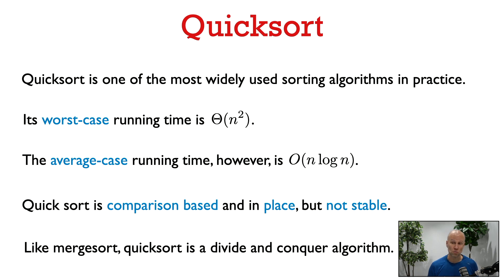The worst-case running time of QuickSort is Θ(n²), so there are inputs that make QuickSort take time proportional to n squared, which might make it seem like you wouldn't want to use QuickSort in practice.